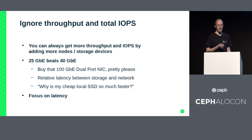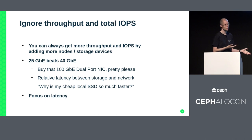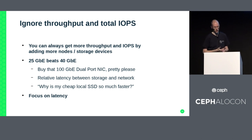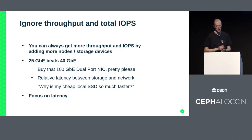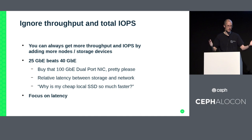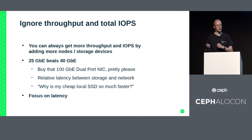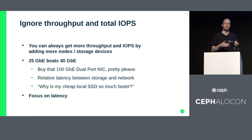People buy 40 gigabit because it's faster than 25, but the signaling rate is actually lower on 40 gigabit than on 25 gigabit. I don't think anyone should be buying 40 gigabit anymore - everybody should be buying 25 or 50 gigabit these days. Latency is the one thing that's really hard to fix because it's basically static. People compare local SSD performance to what they get out of a distributed system and notice it's much slower - because you have to go through the network multiple times. Focus on the latency - that's the thing that's really hard to fix.